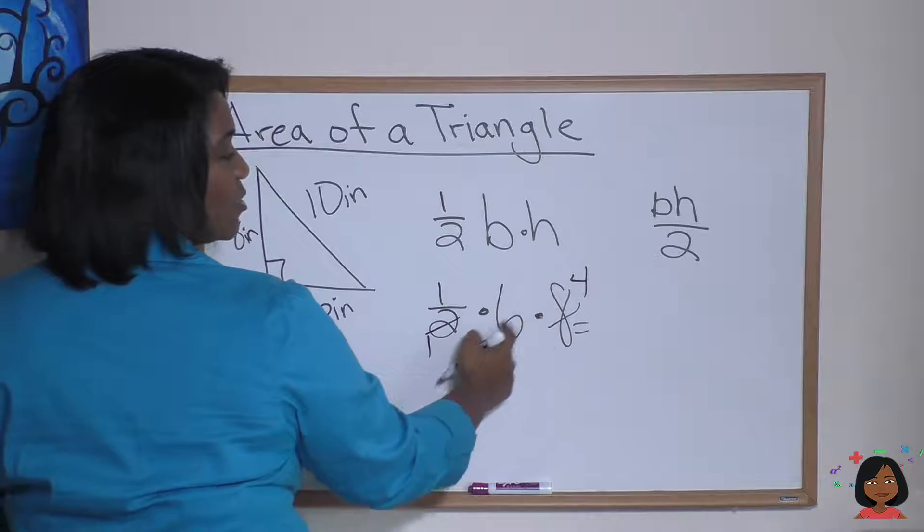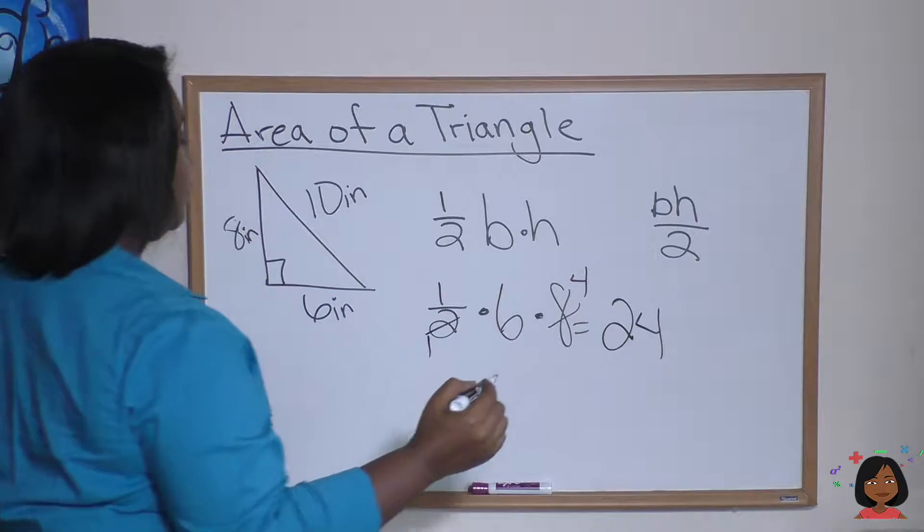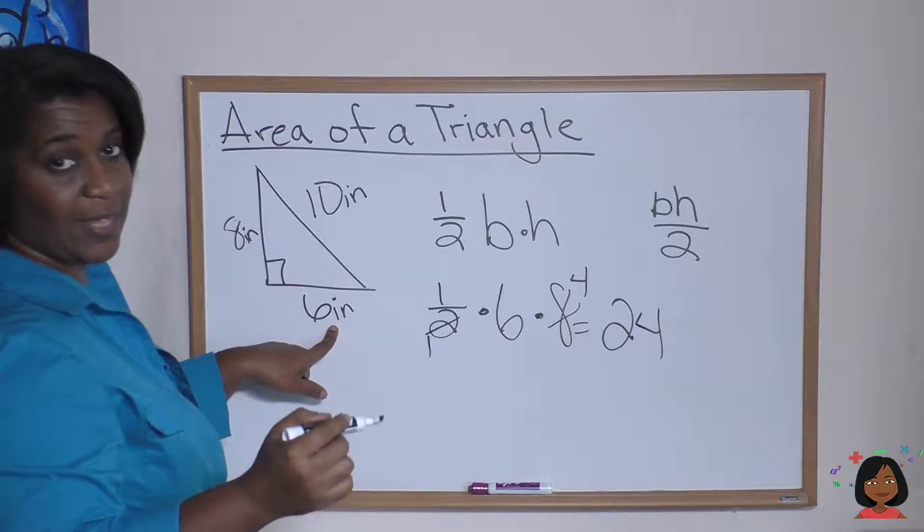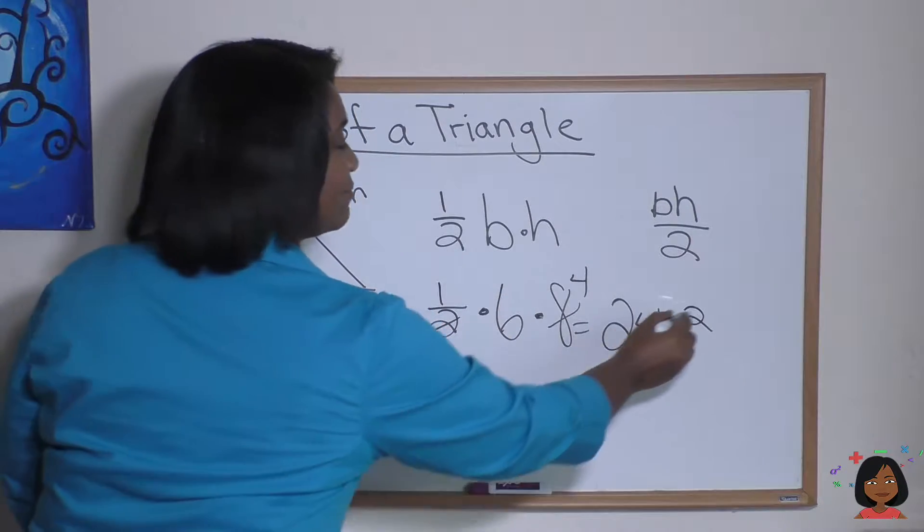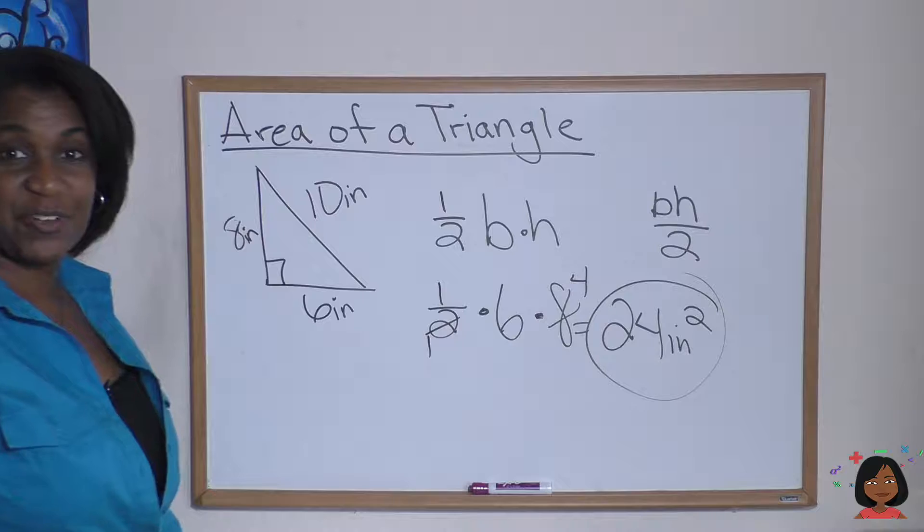Now I can just do six times four and I will get 24. Remember the label: inches squared. That's your area.